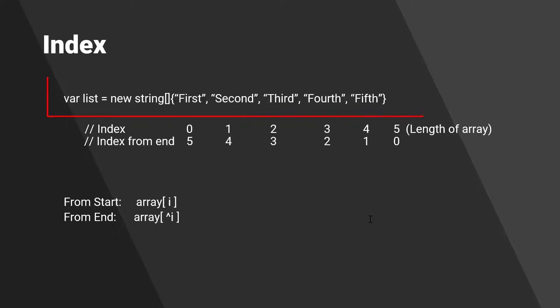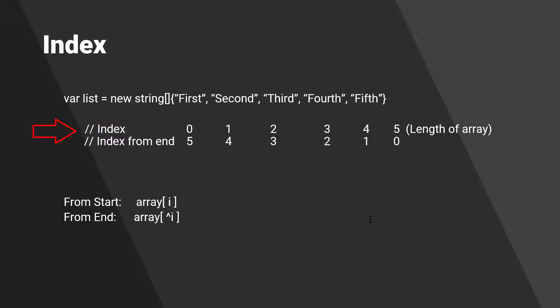Let's understand how it works. Here I have a simple string array with five elements: first, second, third, fourth, and fifth. If you talk about the regular index, it starts from zero and goes to four. The total array length is five. If you use the length property on this array, you will get five.